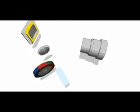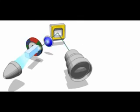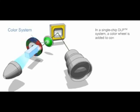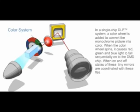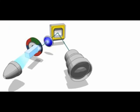In a single-chip DLP system, a color wheel is added to convert the monochrome picture into color. When the color wheel spins, it causes red, green, and blue light to fall sequentially onto the DMD chip. When the on and off states of these tiny mirrors are coordinated with these flashes of light, over a billion colors can be created.